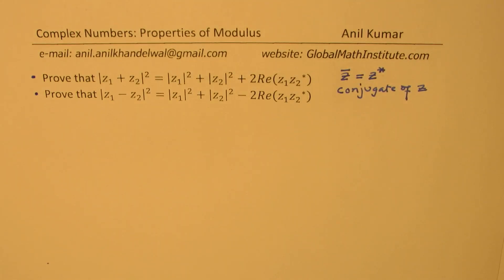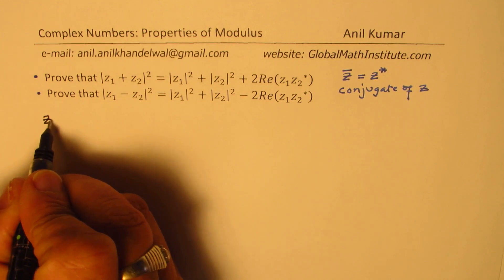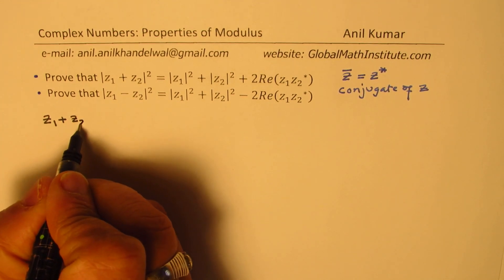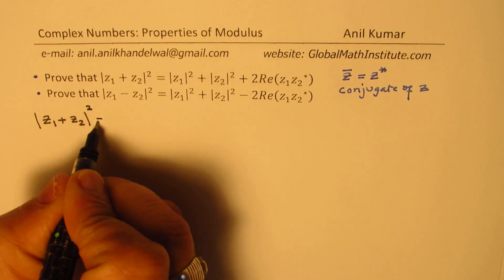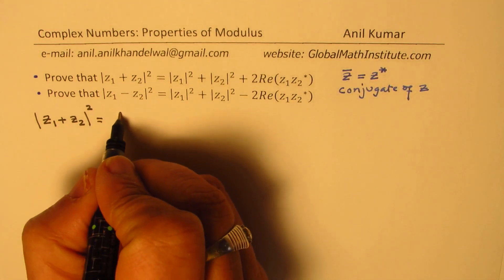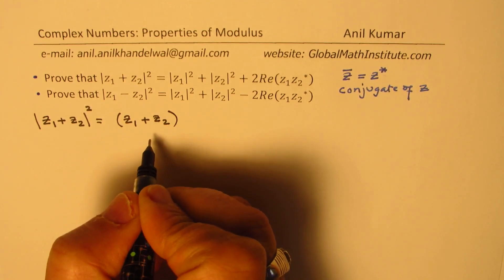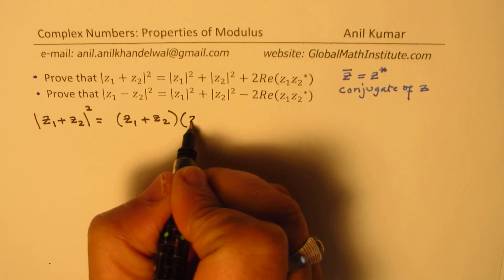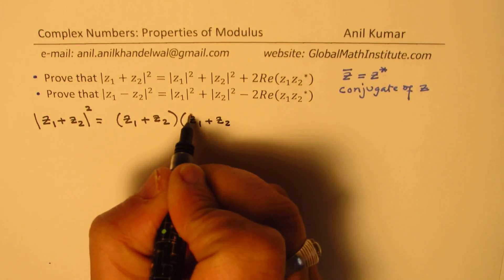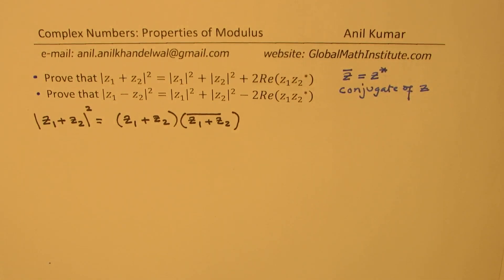With that said, let's begin with the proof for the identity for complex numbers. We'll do the first one, which is the modulus of z1 plus z2 whole square. The absolute value square means it is equal to the sum of z1 and z2 times the conjugate of z1 plus z2.